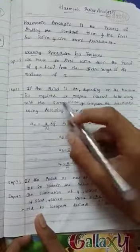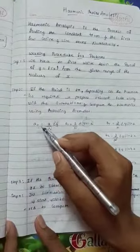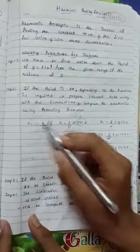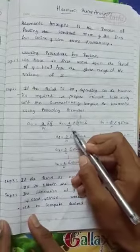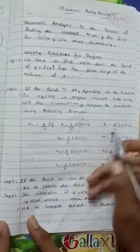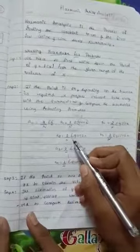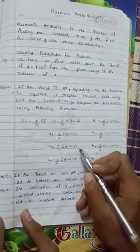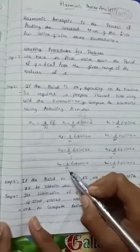After obtaining the summation results, we apply the formulas: a0 equals 2 by n summation of y; a1 equals 2 by n summation y cos x; a2 equals 2 by n summation y cos 2x; a3 equals 2 by n summation y cos 3x; an equals 2 by n summation y cos nx.